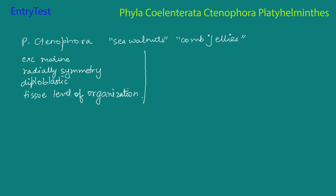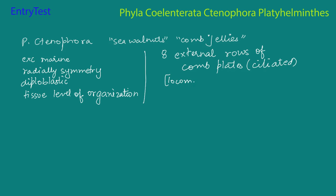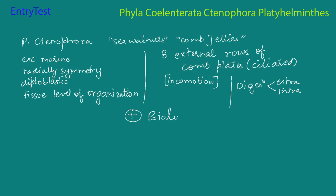The body has about eight external rows of comb plates. These comb plates have cilia, so they are ciliated. The basic purpose of the cilia is to help in movement and locomotion. Digestion in this case is both extracellular, just like in Hydra, and intracellular. One more feature of these animals is bioluminescence — that means they give off light; the organism emits light on its own, and this is present in most of them.